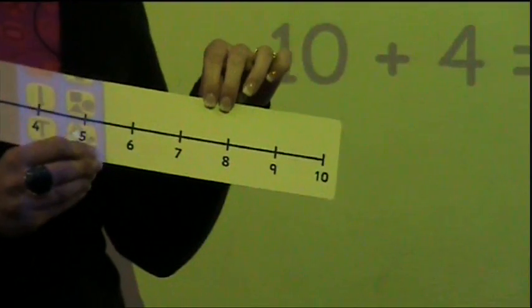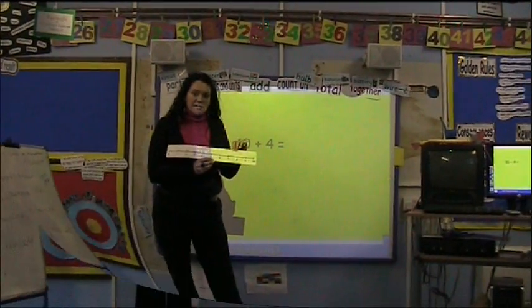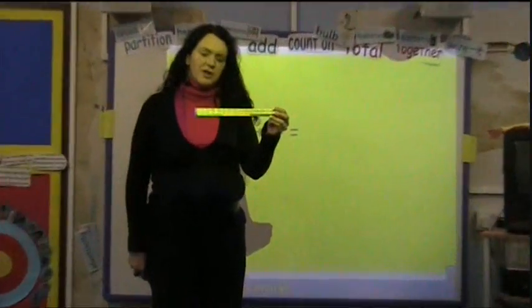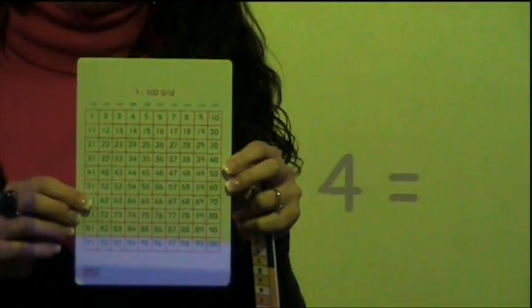This method can also be used with higher numbers, two-digit numbers and three-digit numbers. You could also use a ruler which has numbers on. We often use these in the classroom. Or a hundred square which can be also drawn if you haven't got a copy or you can download them from the internet.